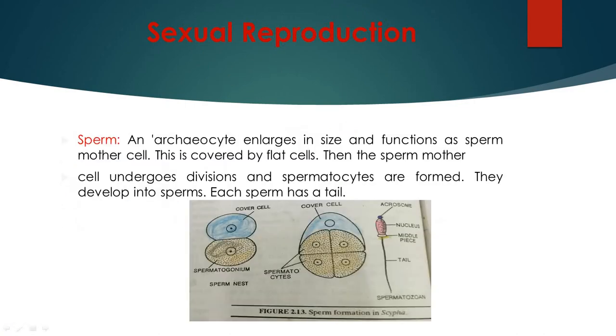So first, how the sperm is formed. Like an archaeocyte cell, this was sperm mother cell, just spermatogonia. Coenocyte or whatever gets surrounded by a cover. This cover consists of one or more flattened cells that is called cover cell. Spermatogonia is surrounded by that.